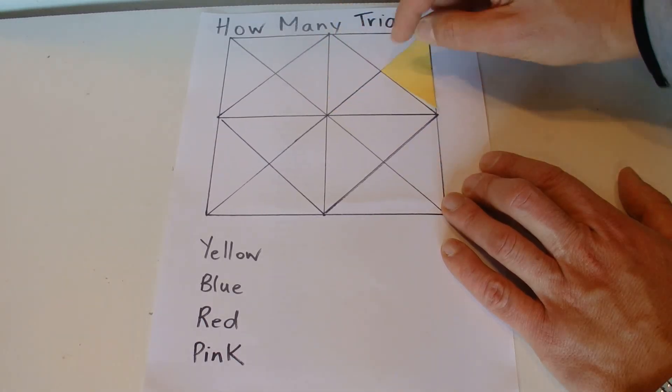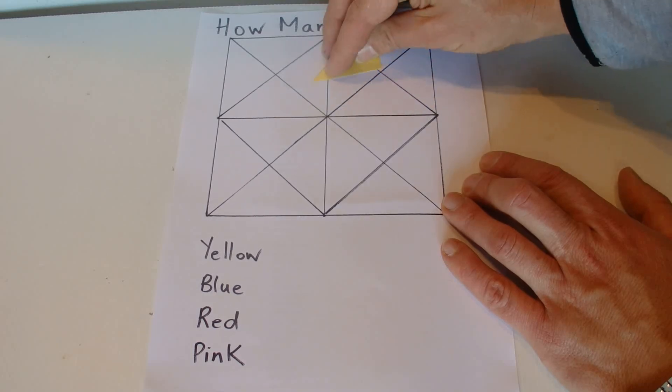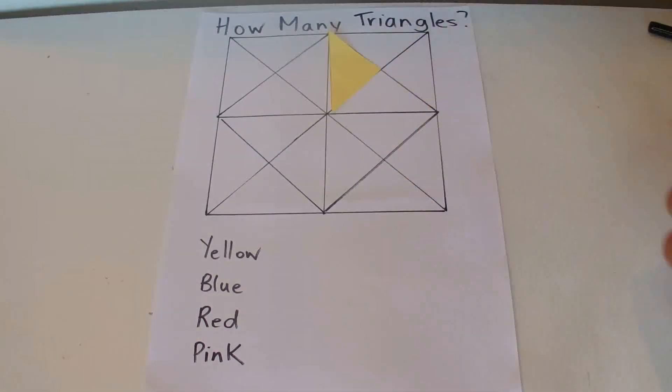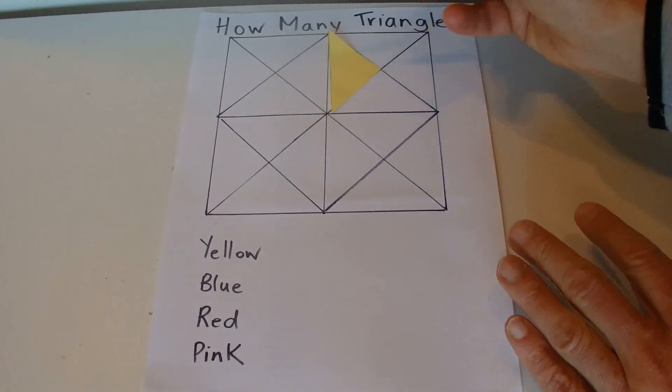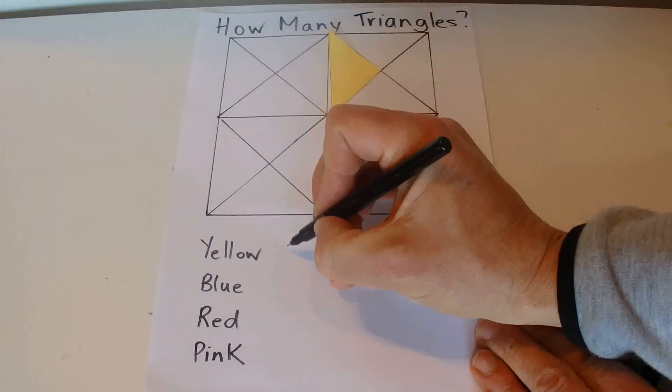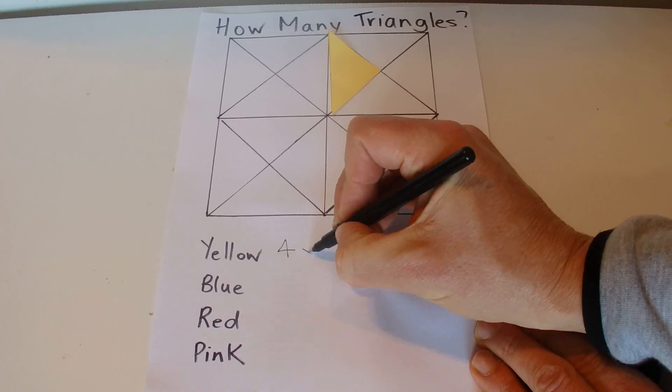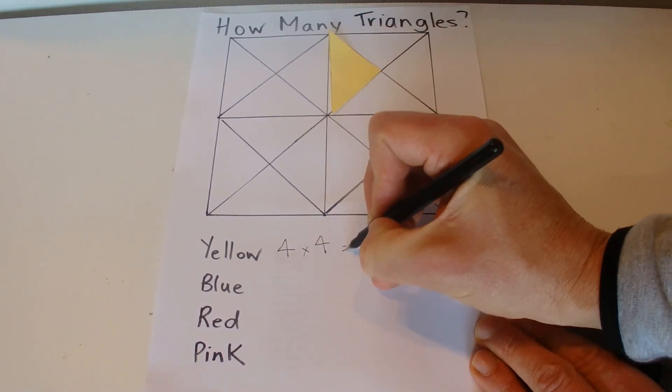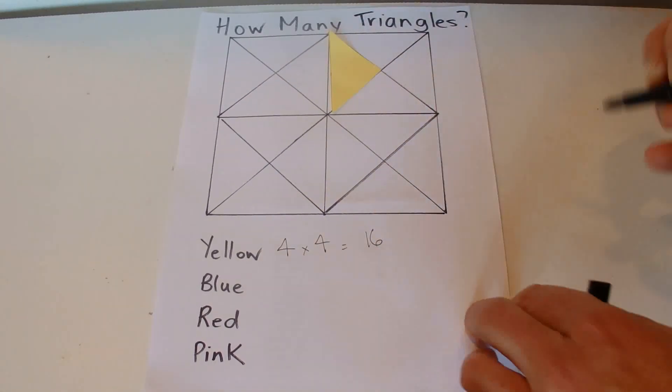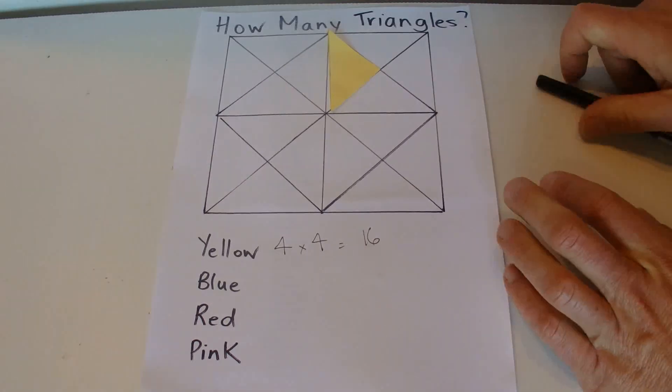And there's four boxes so we have four multiplied by four equals sixteen—sixteen of the small yellow triangles.